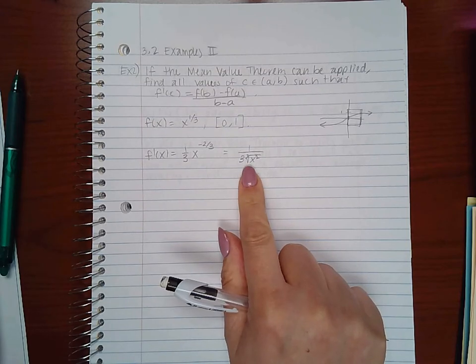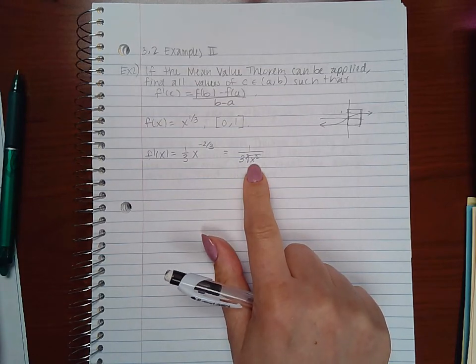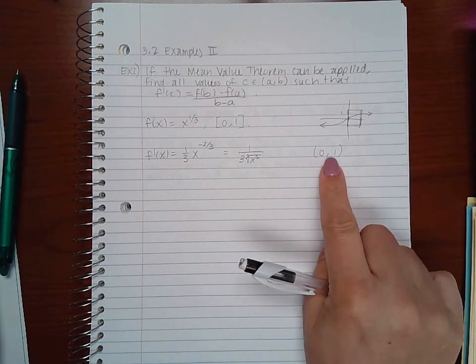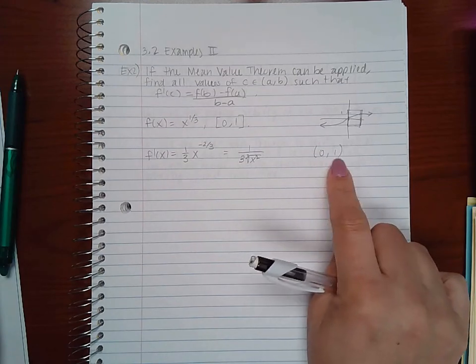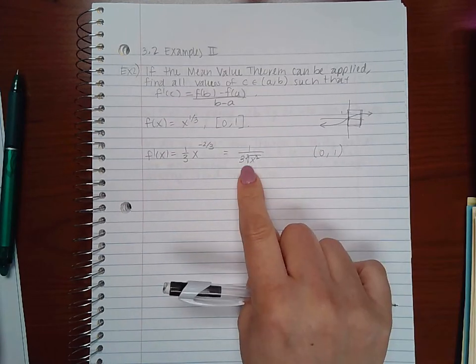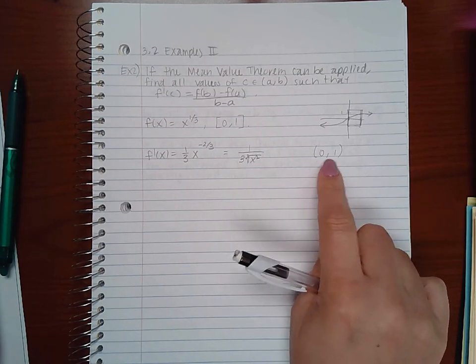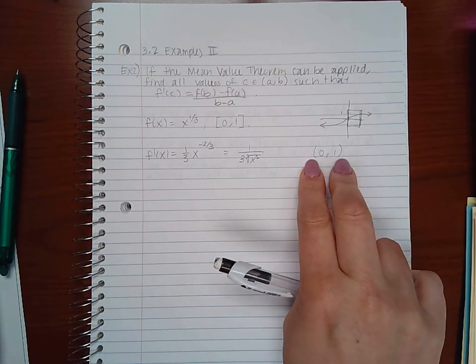Now the only value that makes this derivative not exist is if x were 0, but remember it has to be differentiable on the open interval (0,1), and 0 is not included in the open interval. So this function is differentiable for every x value on 0 to 1 not including the endpoints, so it does meet the criteria.